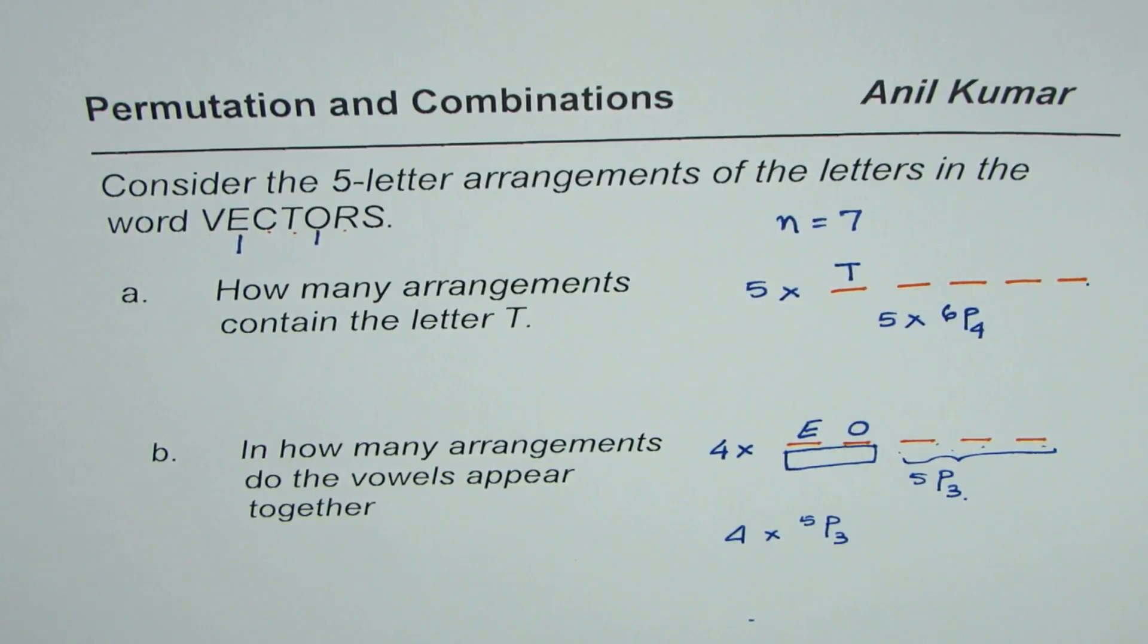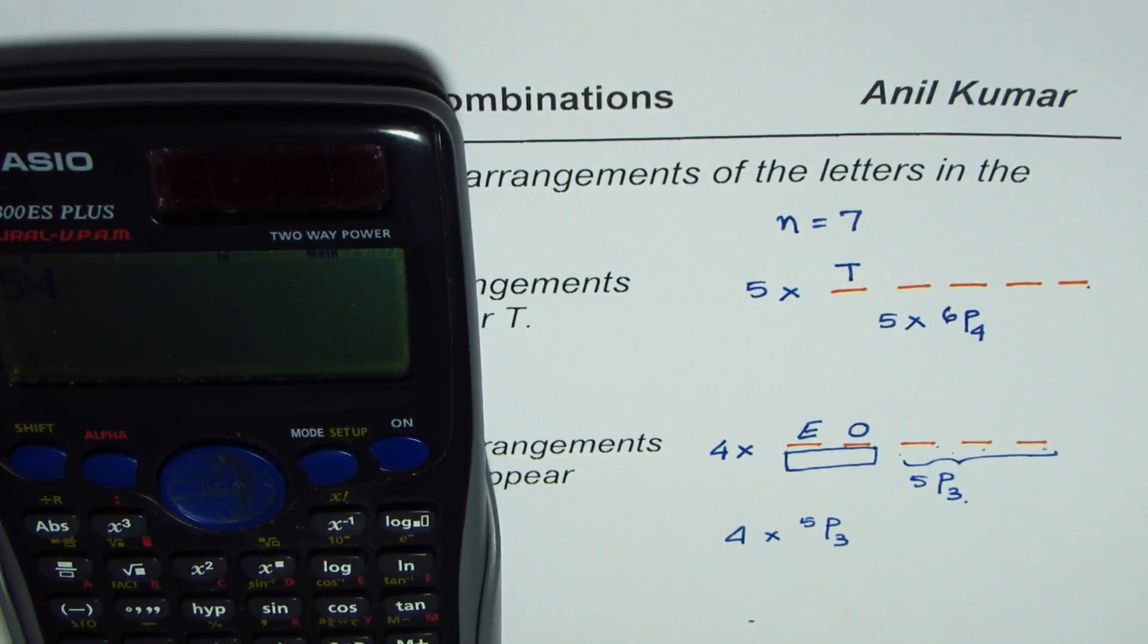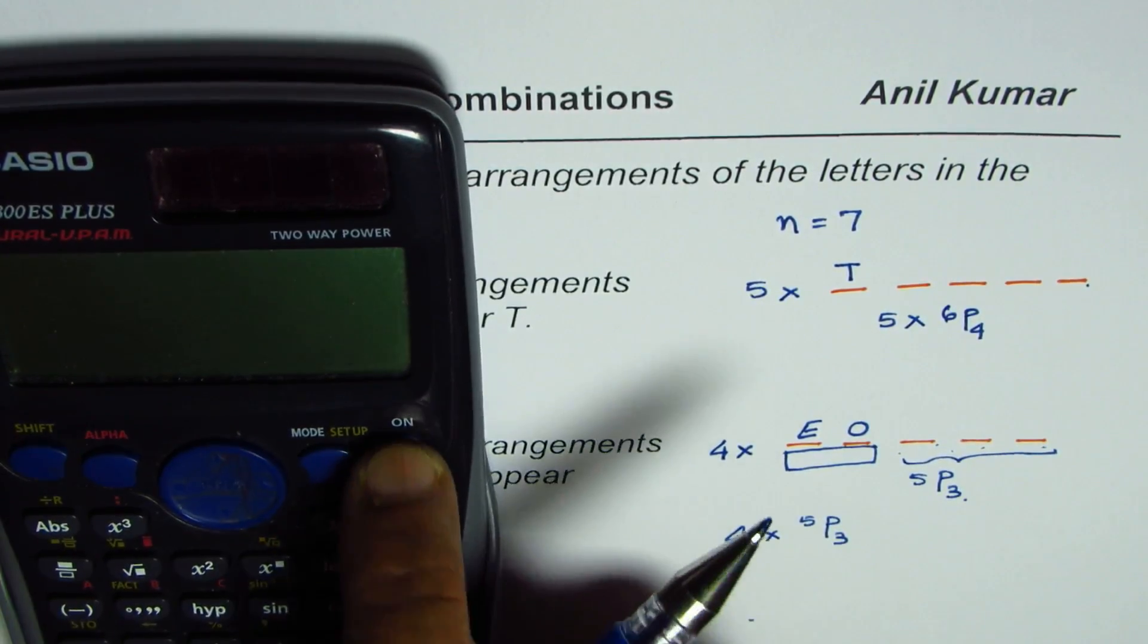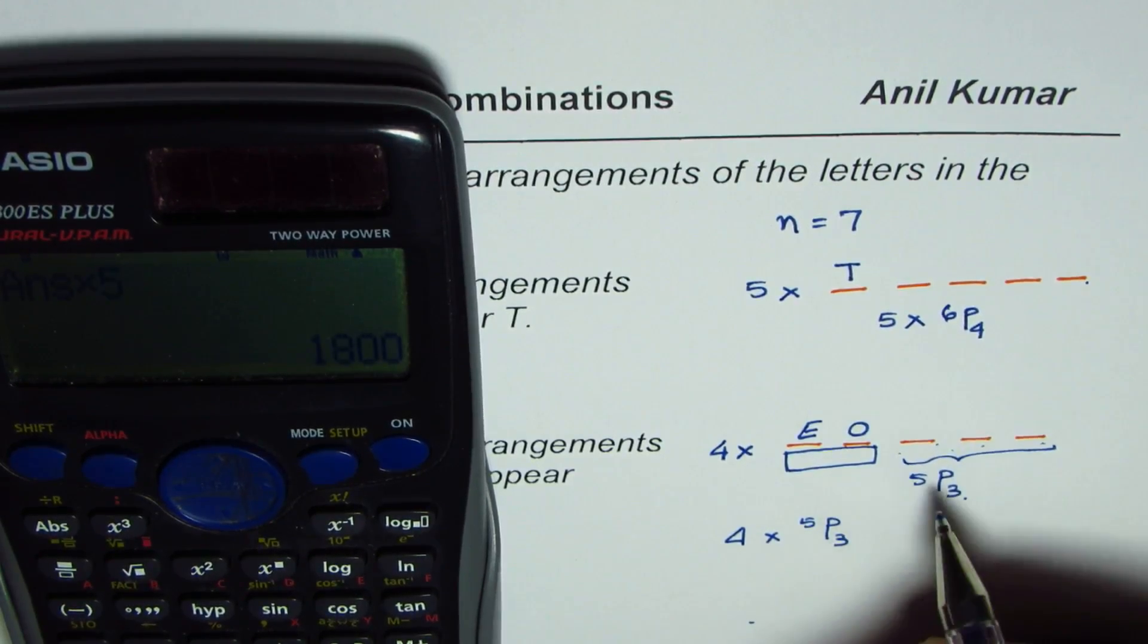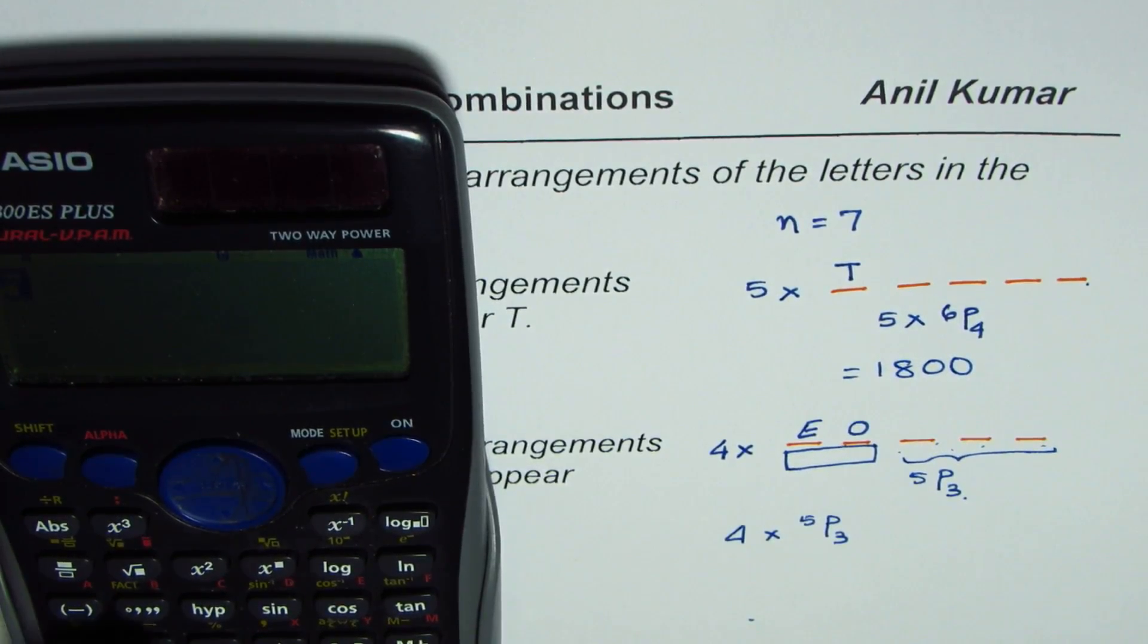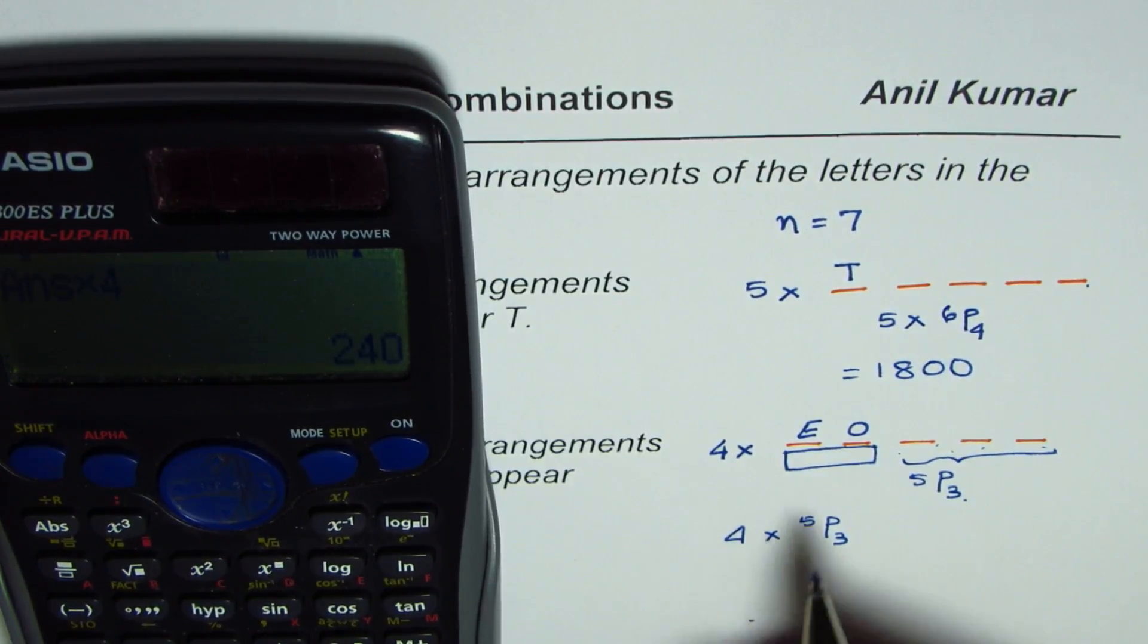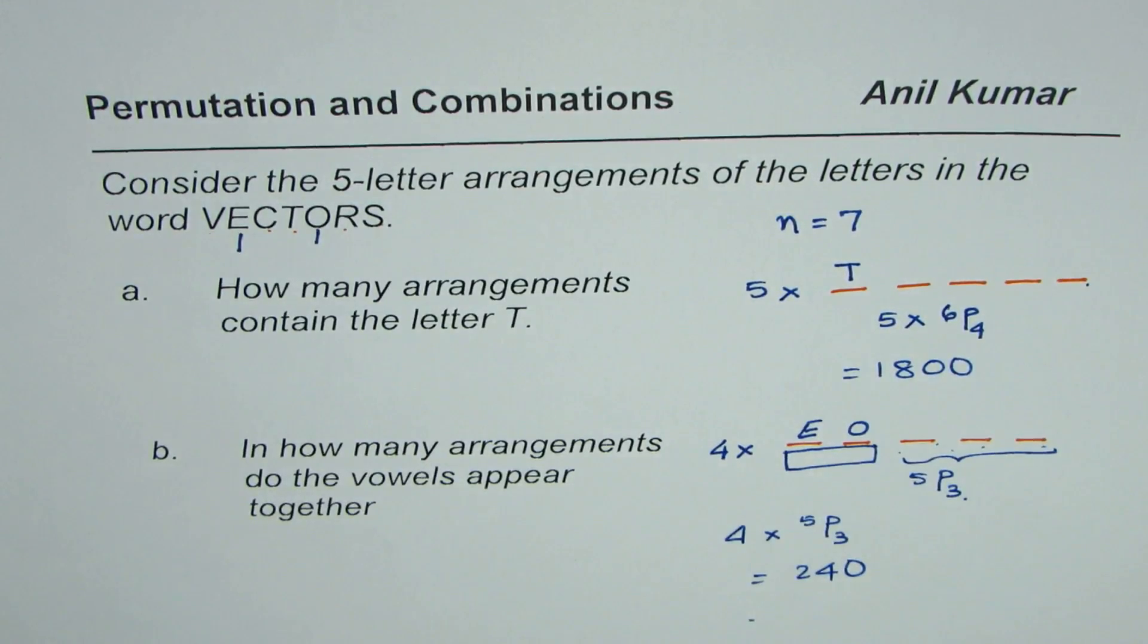Now you can use a calculator to calculate the answer. So we have five times 6P4. Let's do 6P4 first. 6P4 equals 360 times five equals 1,800. And for the next one, it is 5P3 times four equals 240. So that is how we can solve such questions. I hope that helps, thank you.